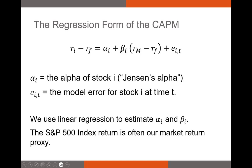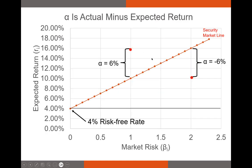The alpha and beta will be the same across all observations, but R sub I, R sub F, and R sub M change each period. The error term exists to balance the left-hand side and the right-hand side of the equation. This error term is for stock I at time T.